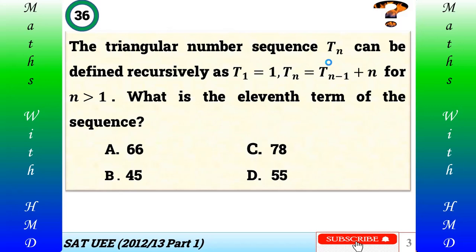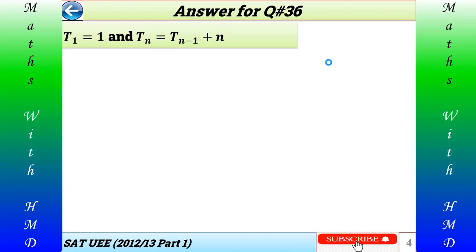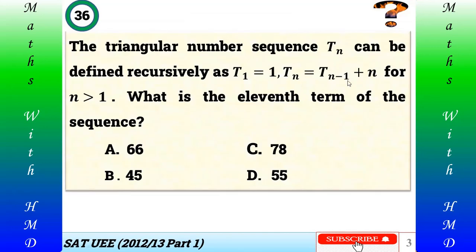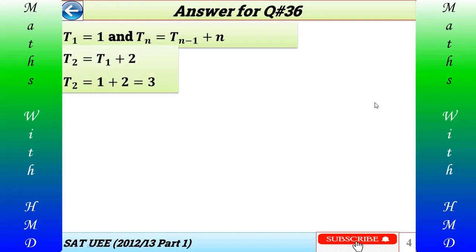Here is the answer for question number 36. T(1) is given as 1, and the nth term of this triangular sequence is given as T(n) = T(n-1) + n. So T(2) is equal to T(1) plus 2. T(1) is 1, so T(2) = 1 + 2 = 3.